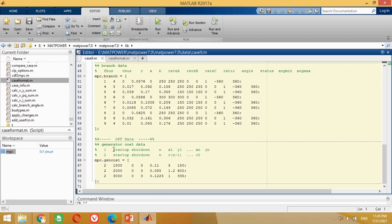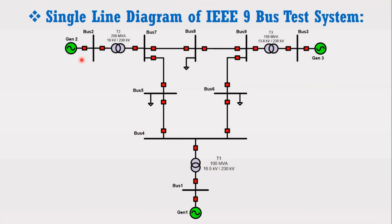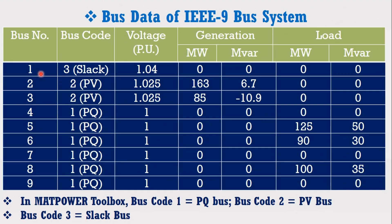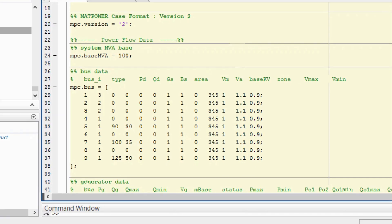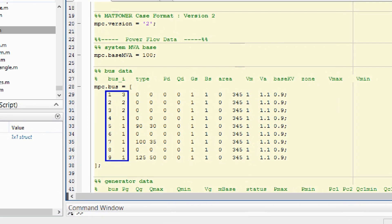Let's check the IEEE 9 bus test system data. The figure shows the single line diagram of the IEEE 9 bus system. This test system consists of 3 generators as well as 3 loads. The bus data table shows that MATPOWER has assigned code 1 for the load bus, 2 for the PV bus, and 3 for the slack bus. Bus 1 is the slack bus with code 3, buses 2 and 3 are PV buses with code 2, and the rest are load buses with code 1. Come to the MATLAB program and check the bus number and bus code information — you can see both are correct.